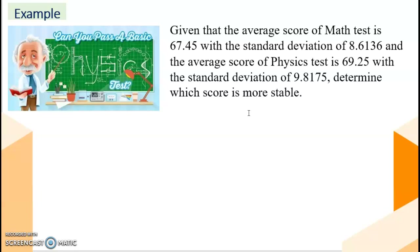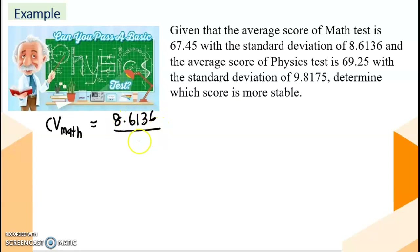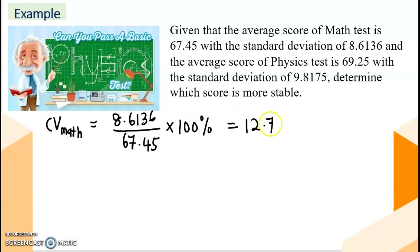We are going to use the coefficient of variation. First, we find the CV for math: standard deviation divided by mean = 8.6136 divided by 67.45, multiplied by 100%. We get 12.77% for math.